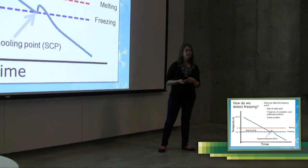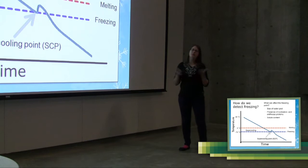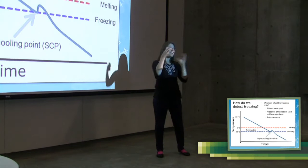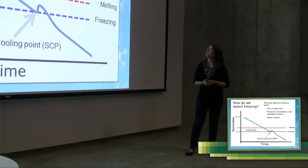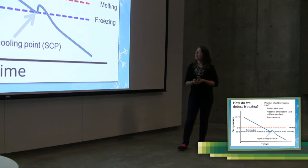And so what animals can do is they can manipulate when that supercooling point happens. They can do that by reducing the amount of water that they have in their bodies. So the less water they have, the less likely the fewer molecules there are that could actually hit that lattice shape just right. The presence of ice nucleators or antifreeze proteins and I'll talk a little bit more about those later as well as solute content.